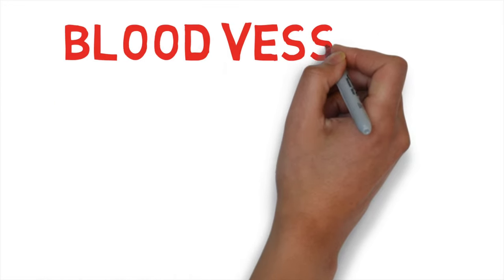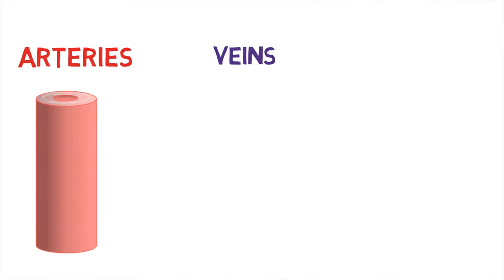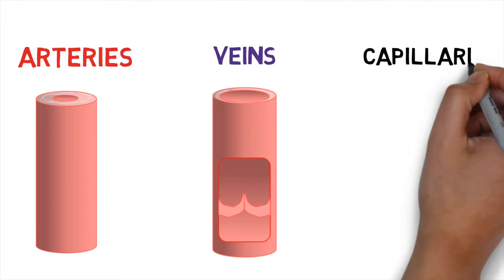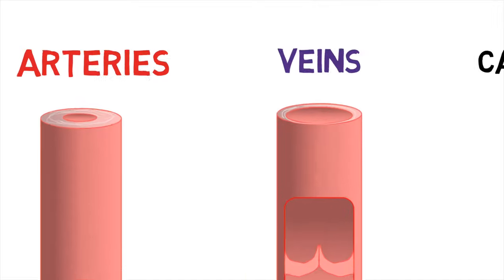So we're now going to look at the blood vessels. And you need to be able to label the key differences between the three types of blood vessels. They are the arteries, we also have the veins, and then we have the fine ones which are called the capillaries. These are the small blood vessels. So we need to know what they do, and we need to be able to label the key parts of arteries, veins, and capillaries.